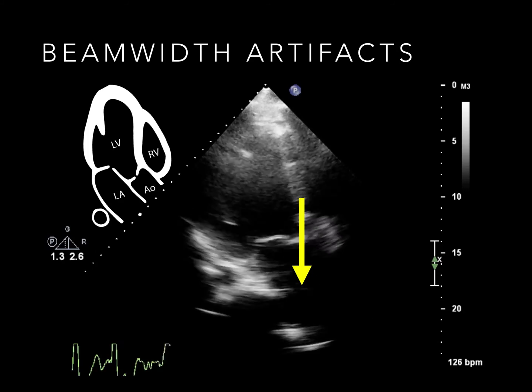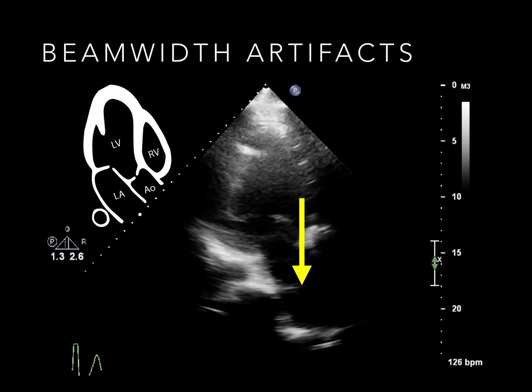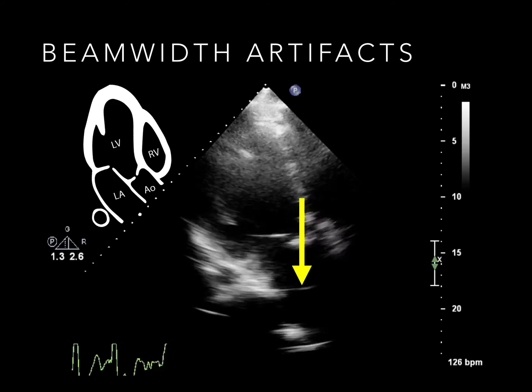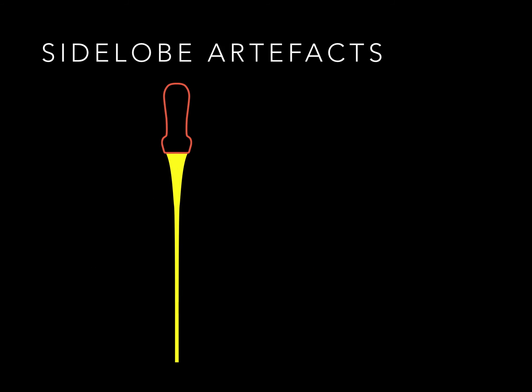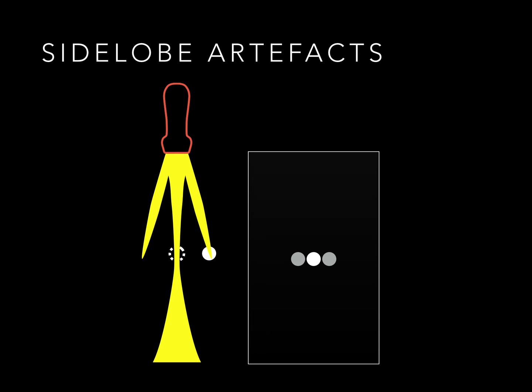Here in the left atrium, we see an artefactual echo density. This could be from the LA wall or some out-of-plane structure included in the beam-width. The machine assumes the beam looks uniform, but due to interference patterns it actually has extra bits on the side called side lobes. If an object is in one of these side lobes, the machine will assume it's actually in the main beam. The resulting effect is similar to a beam-width artefact. Happily, harmonics dramatically reduce side lobe artefacts.